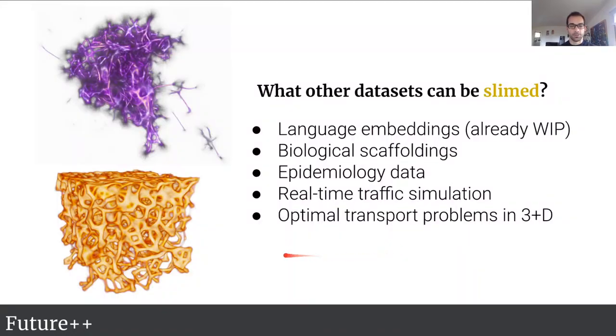In addition we want to fit to different data sets, so we are already working on fitting to language embedding data which is an example you can see on the top here. This is also presented here at VIS in the Vis4DH workshop. Because of its organic qualities, we also think that we can obtain different biological scaffoldings, so for instance things like bone marrow could be reconstructed or produced by this model. We imagine that fitting to different data like epidemiology, real-time traffic simulation, and other optimal transport problems in three and higher dimensions could be useful domains for this model.